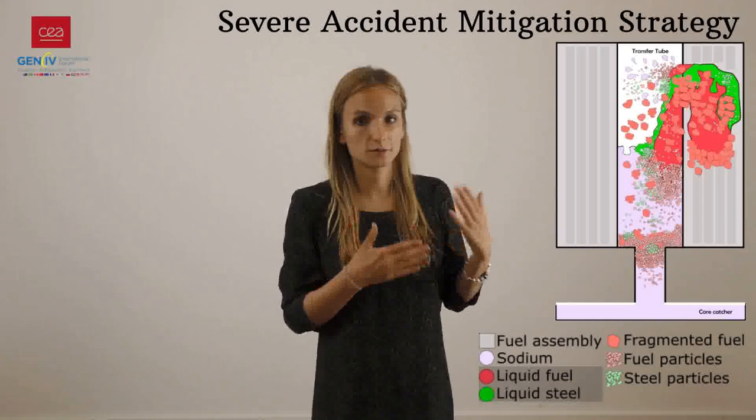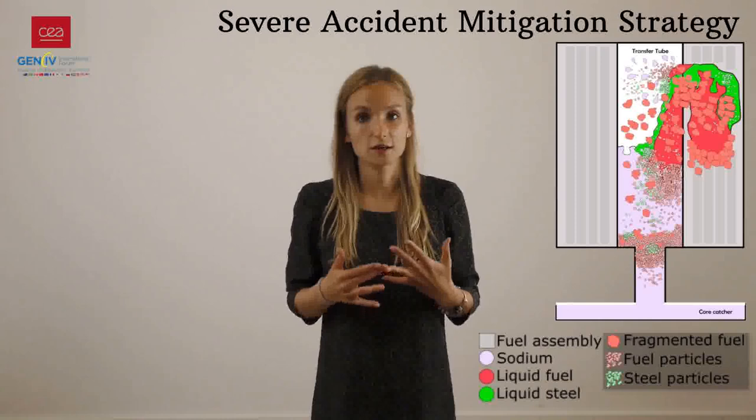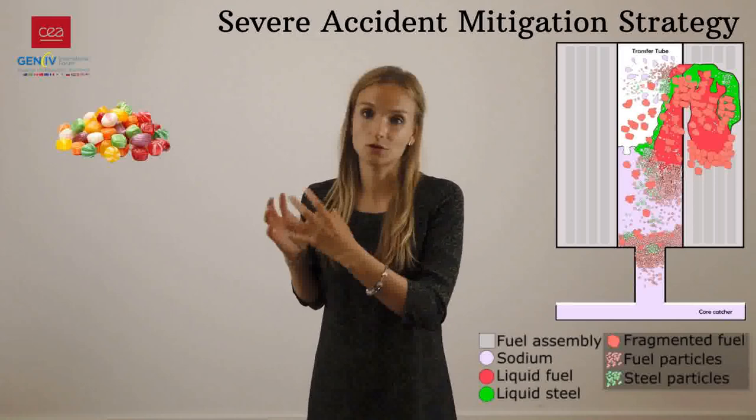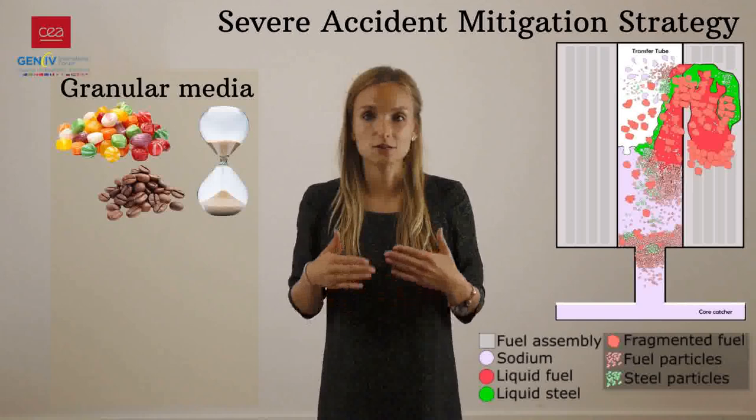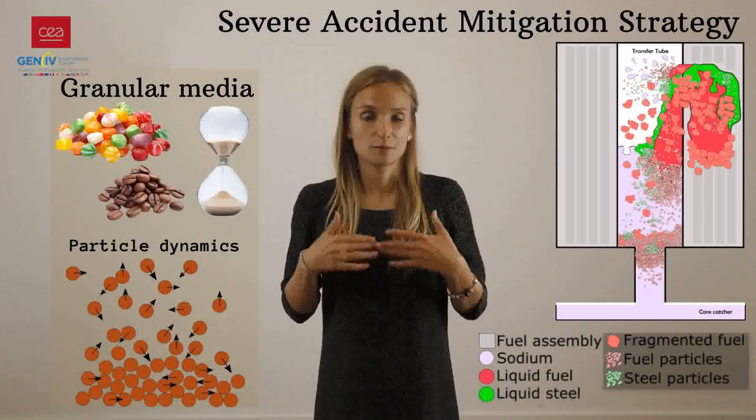As you can see on this illustration, the degradated core is not only composed of molten materials such as fuel or steel, but it is also highly abundant in solid fragments. And these solid fragments can be associated to a collection of candies. A collection of candies belongs to the big family of granular matter, and what is particular about this granular matter is its unique dynamic behavior.